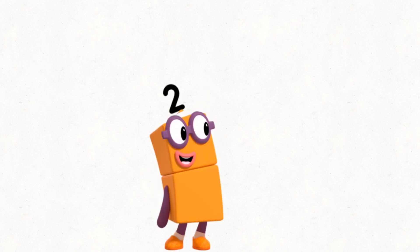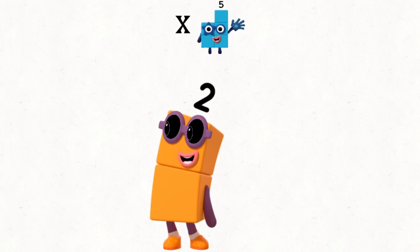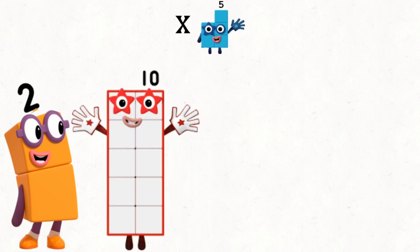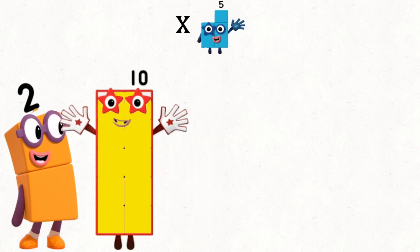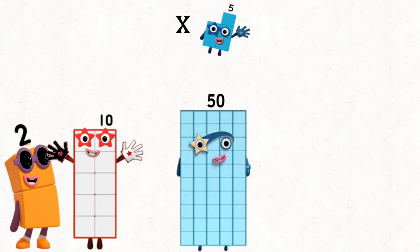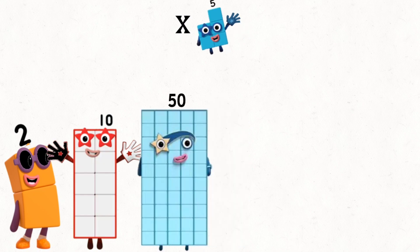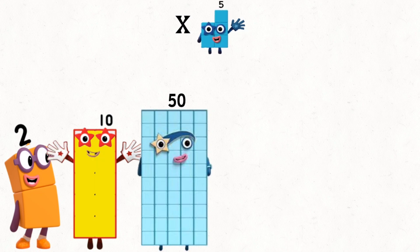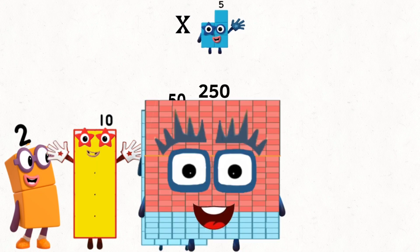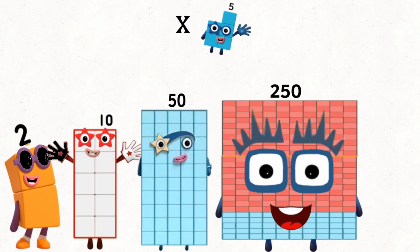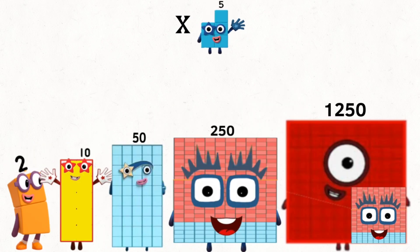2 times 5 equals 10. 10 times 5 equals 50. 10 times 5 equals 250. 250 times 5 equals 1,250.